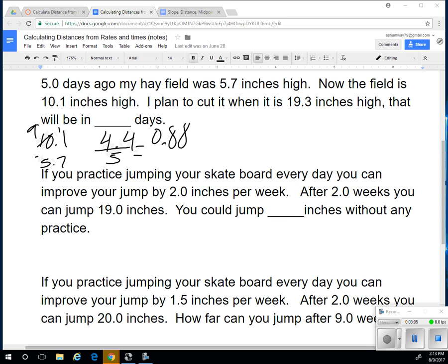So I know my equation is something like this. The height that it's going to be is equal to how high it is now, plus 0.88 times the number of days. We can solve for that number of days, that d, because we can subtract the 10.1, that gives me 9.2, and that's equal to 0.88 times d. So I just have to divide both sides by 0.88.